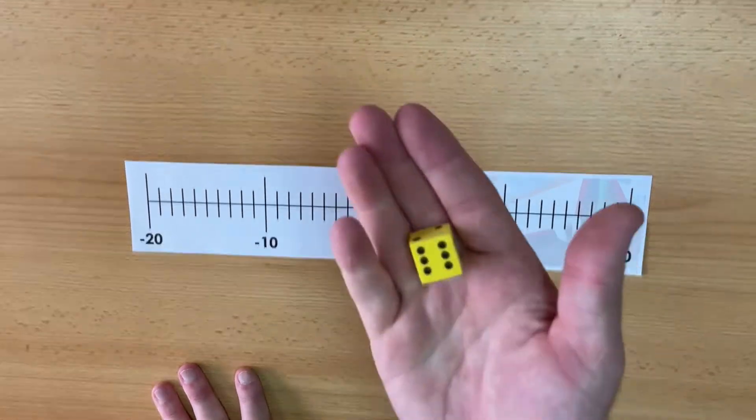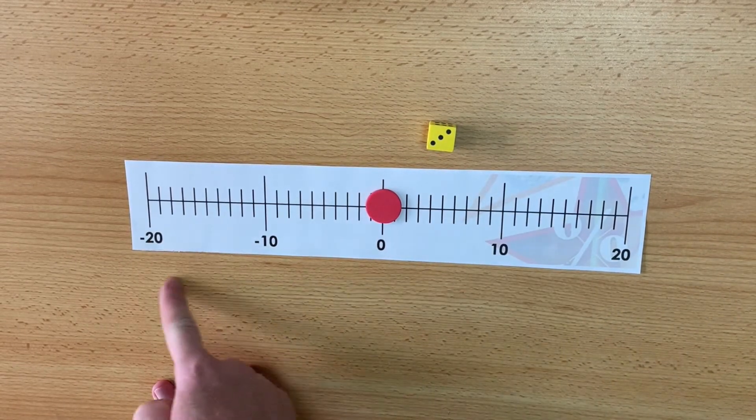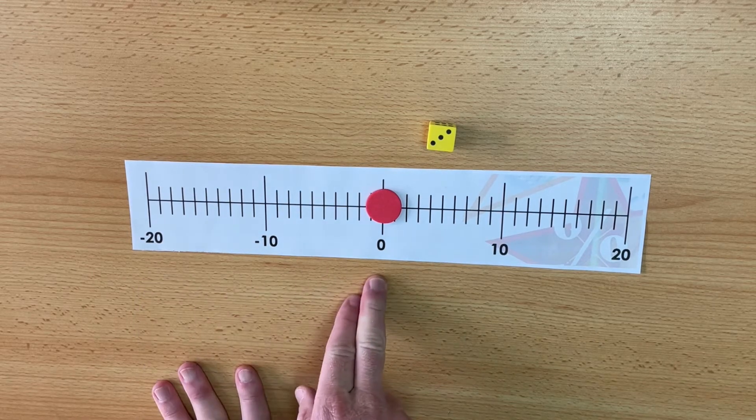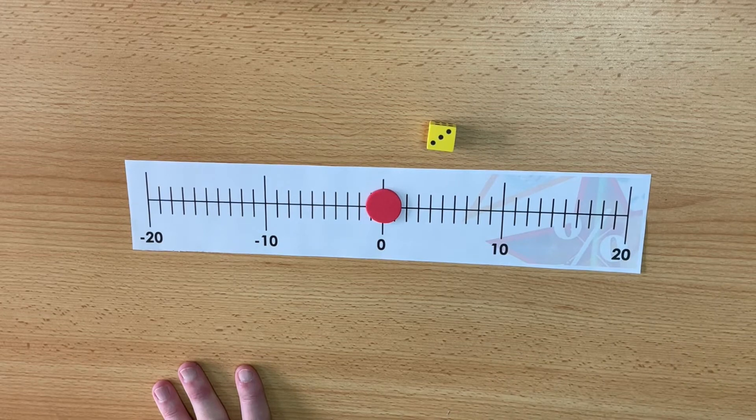Player one goes first and they will roll the dice. Player one is trying to get to negative 20 as quickly as they can. Player two is trying to get to 20 as quickly as they can.